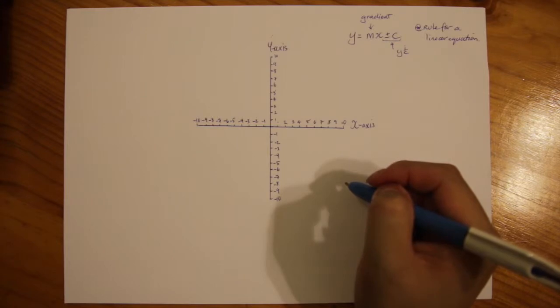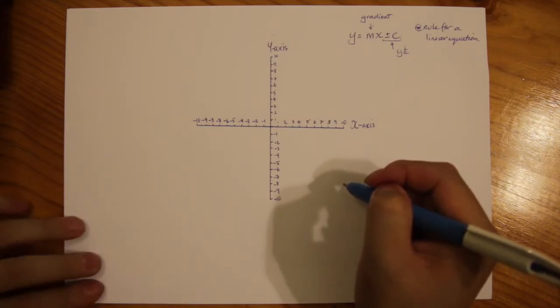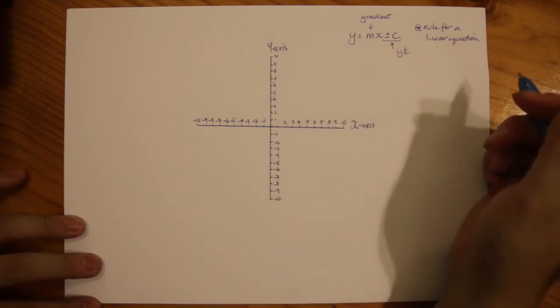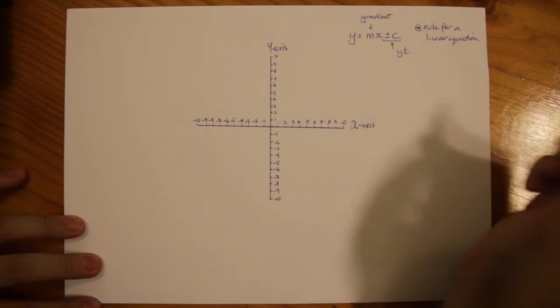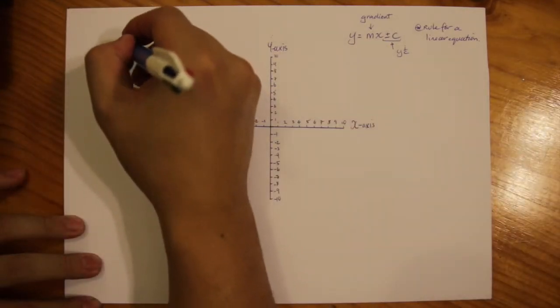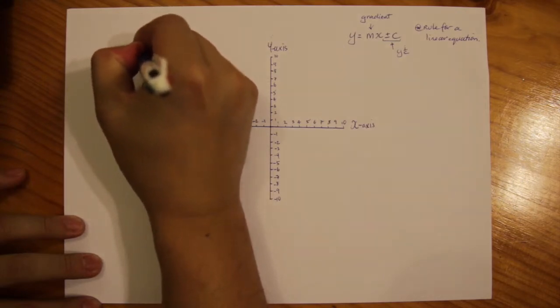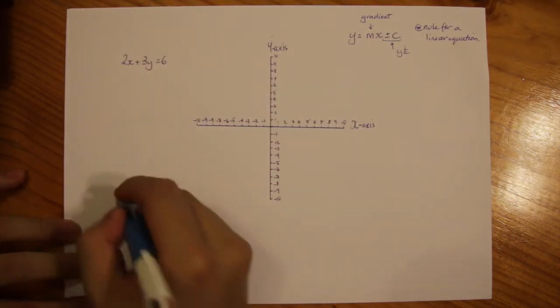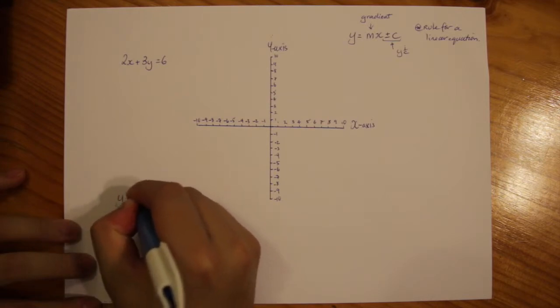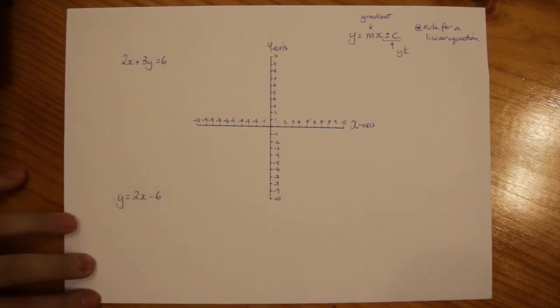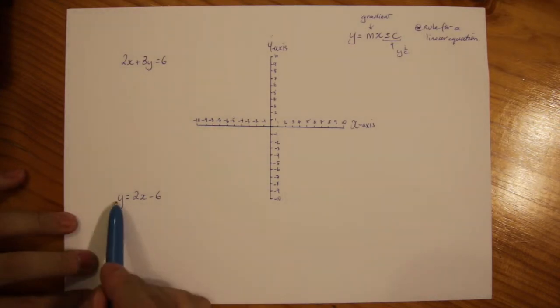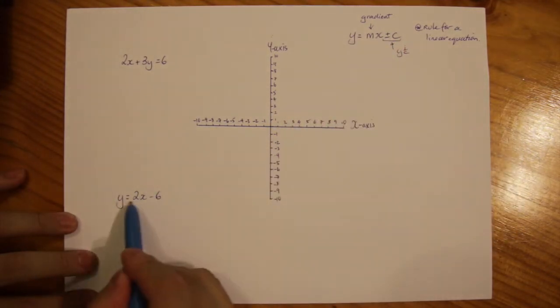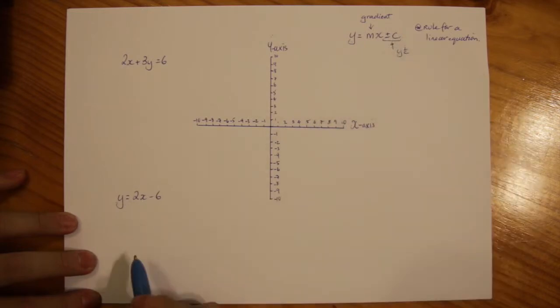Let's put this into practice. I'll show you ways how you can find both the x and y-intercept and then join the dots to graph the linear equation. Here we have first example of 2x plus 3y equals 6, and here's another one that is y equals 2x minus 6. I'm going to start with this bottom one because it actually flows with the format of your rule.